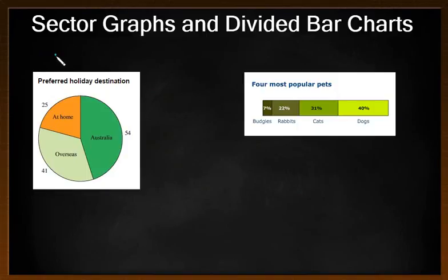First of all, a sector graph. This can also be referred to as a pie chart or a pie graph. It's basically a circular graph. You can see we split it up into three different sections. They're not of even amounts. So we can see, for example, the most popular destination would be Australia with 54 people.